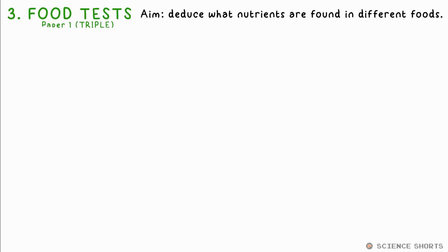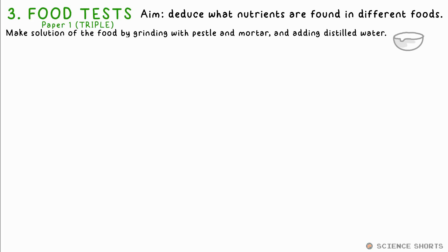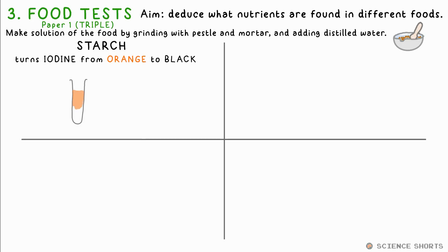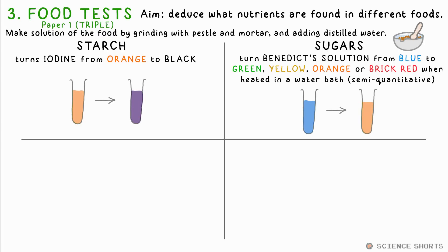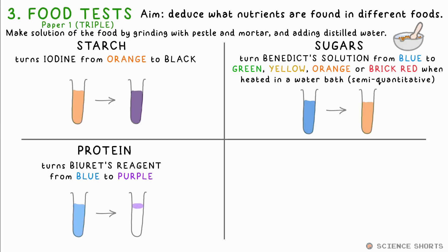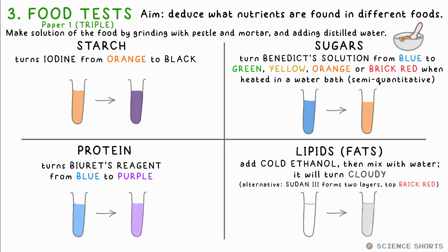Biology 3: food tests — finding out what nutrients are in different foods. For solid food, we grind it using a pestle and water, then add distilled water to create a solution. We've already seen the test for starch: just add iodine solution — if it turns black or dark purple, starch is present. To test for glucose and simple sugars, we add Benedict's solution and heat using a water bath. It's a semi-quantitative test, as the colour can go from blue to green to yellow to orange depending on how much sugar is in the food. Biuret reagent will turn from blue to purple in the presence of protein. To test for fats — that's lipids — we add cold ethanol and leave it for a minute, then add this to a test tube of water. If the solution goes cloudy, that's a positive test for lipids.